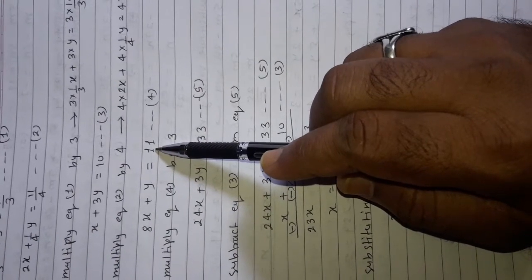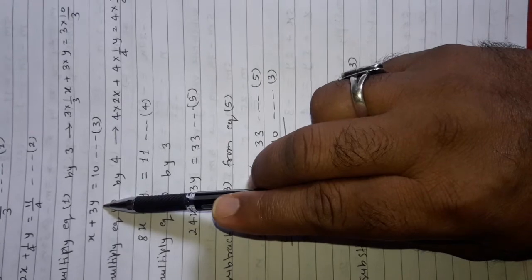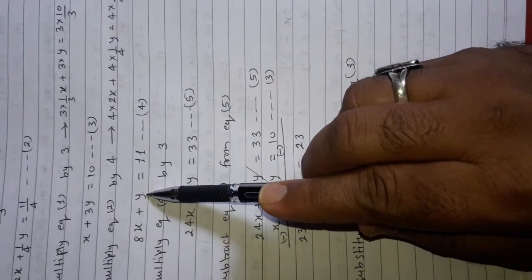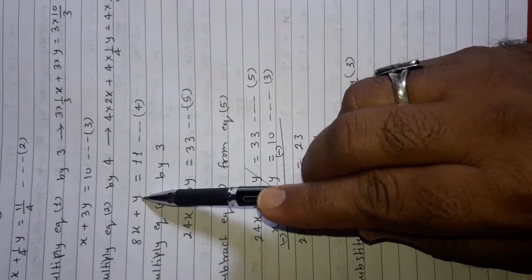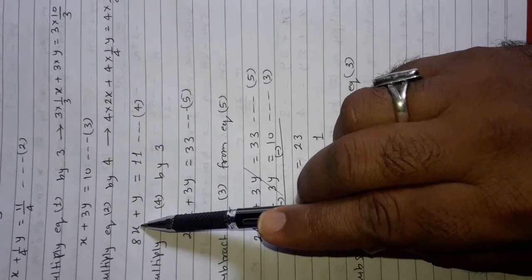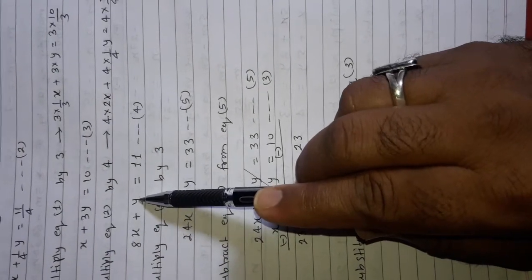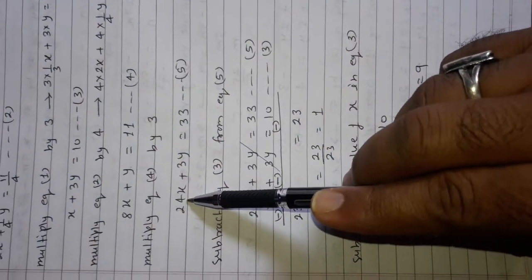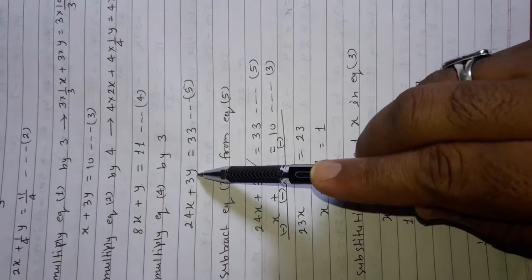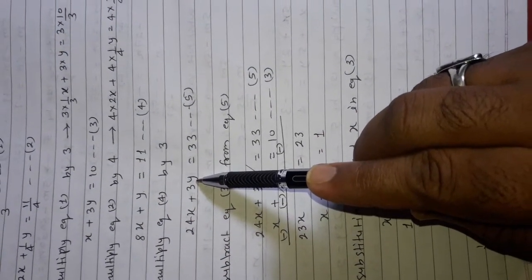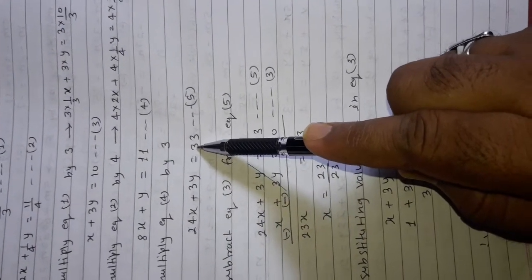Now we need to make the y coefficients equal. In equation number 3, the coefficient of y is 3y, while in equation number 4 it is 1y. So we multiply equation number 4 by 3: 8x into 3 gives 24x, y into 3 gives 3y, and 11 into 3 gives 33. This becomes equation number 5: 24x plus 3y is equal to 33.